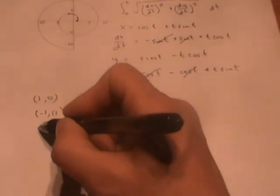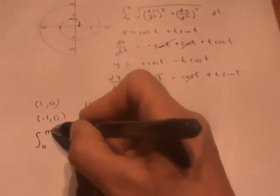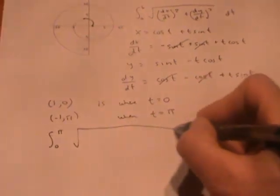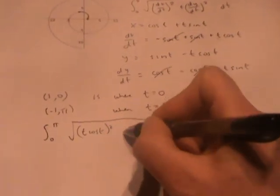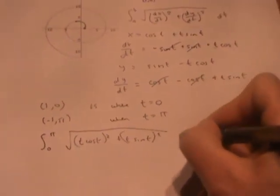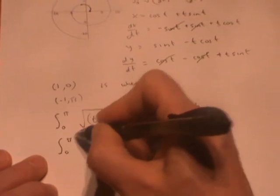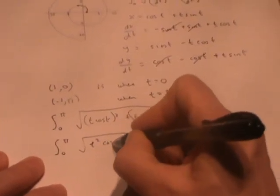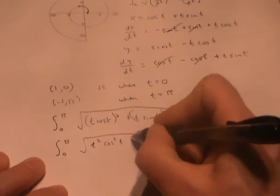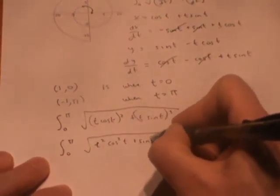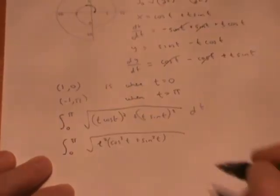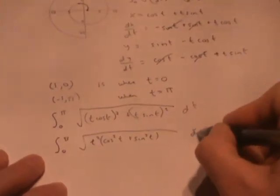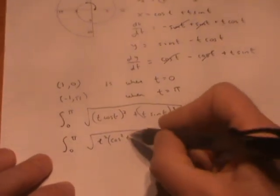So I want to calculate the integral from 0 to π of the square root of (t cos t)² plus (t sin t)² dt, which simplifies to the square root of t² (cos²t plus sin²t) by multiplying out and factoring out t². Since this part here is just 1,